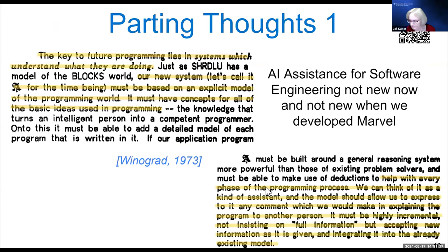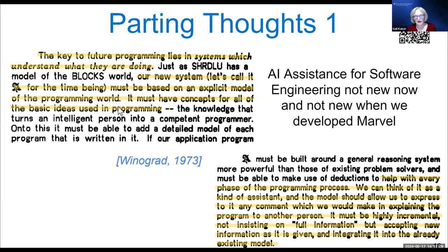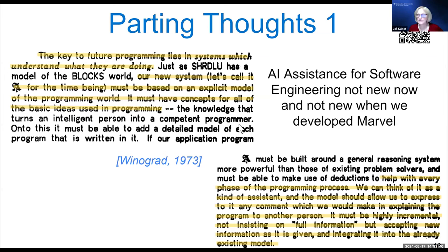In conclusion: AI assistance for software engineering is not new. Marvel was not new. These ideas go back to a paper written by Terry Winograd in 1973 about a programming model based on AI understanding of what's going on in code — and it essentially predicts what we're doing now with execution traces, though that's not where we got the idea. It's a very interesting paper to go back and read; it predicted an awful lot of what we have now.